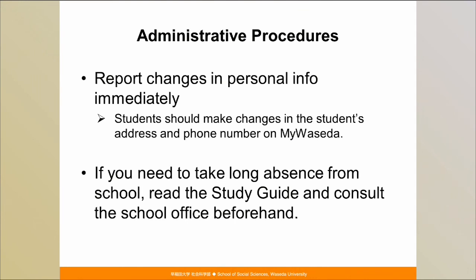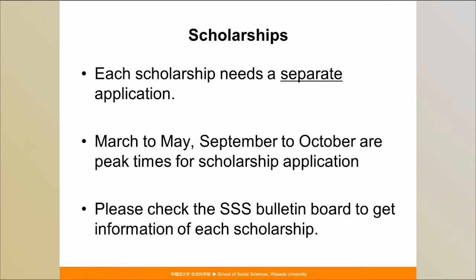If you cannot attend classes temporarily due to sickness, a family matter, bad weather or other reasons, there is a system through which you can ask the instructor and school office for permission. However, it will be up to the instructor to decide how to treat that absence. Finally, about scholarships: please note that each scholarship requires a separate application. From March to May, and September to October, many scholarships begin looking for applicants. You can find scholarship information on the School of Social Sciences bulletin board on the third floor. Please keep in mind that your application must contain true and complete information — if you make a false statement, you will be disqualified from applying for that scholarship.